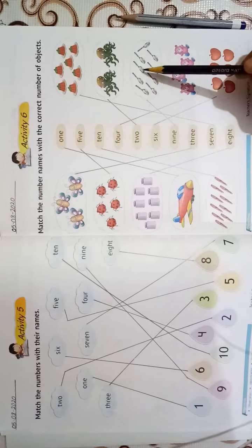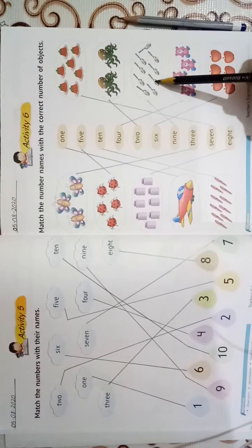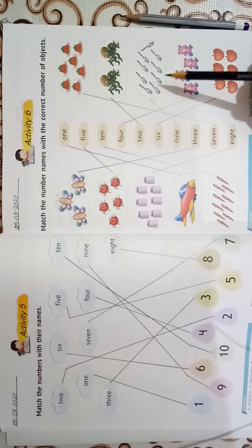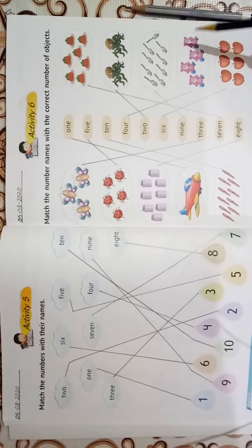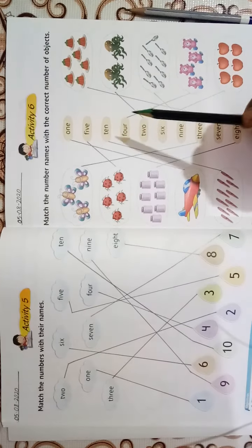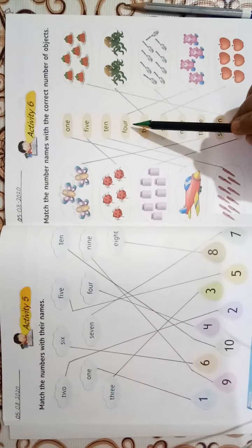We will match 1, 2, 3, 4, 5, 6, 7, 8, 9. We will match 9 pans with N-I-N-E 9. 1, 2, 3, 4 teddy. We will match these teddies, 4 teddies with F-O-U-R 4.